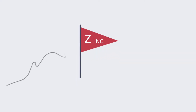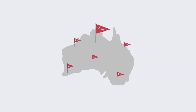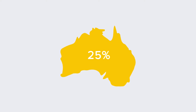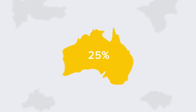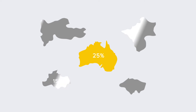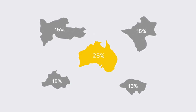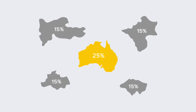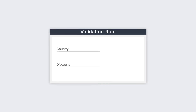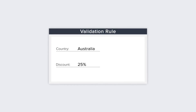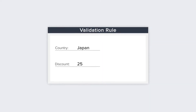So let's look at an example. Zilker Inc. is planning to expand its businesses to Australia. For customers from Australia, a special discount of up to 25% is offered as part of its promotional activities, as opposed to the normal 15%, which is the maximum discount for customers from other countries. Let's look at how we can define a validation rule to ensure that sales reps from the respective regions stick to the appropriate discounts without the need for manual validation.